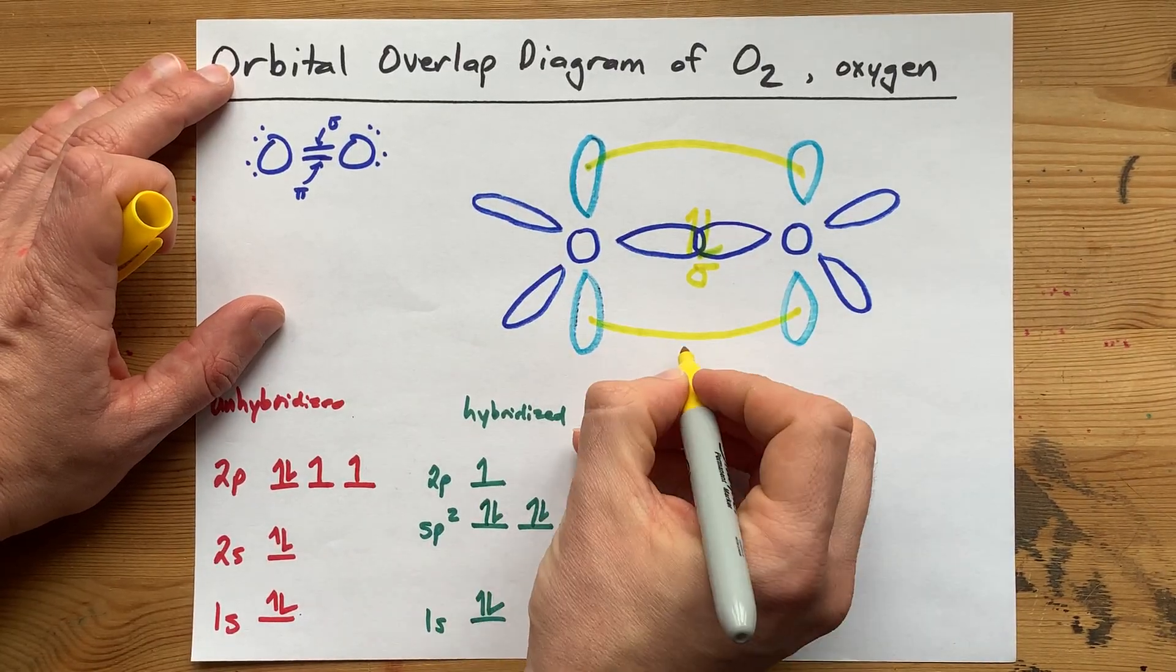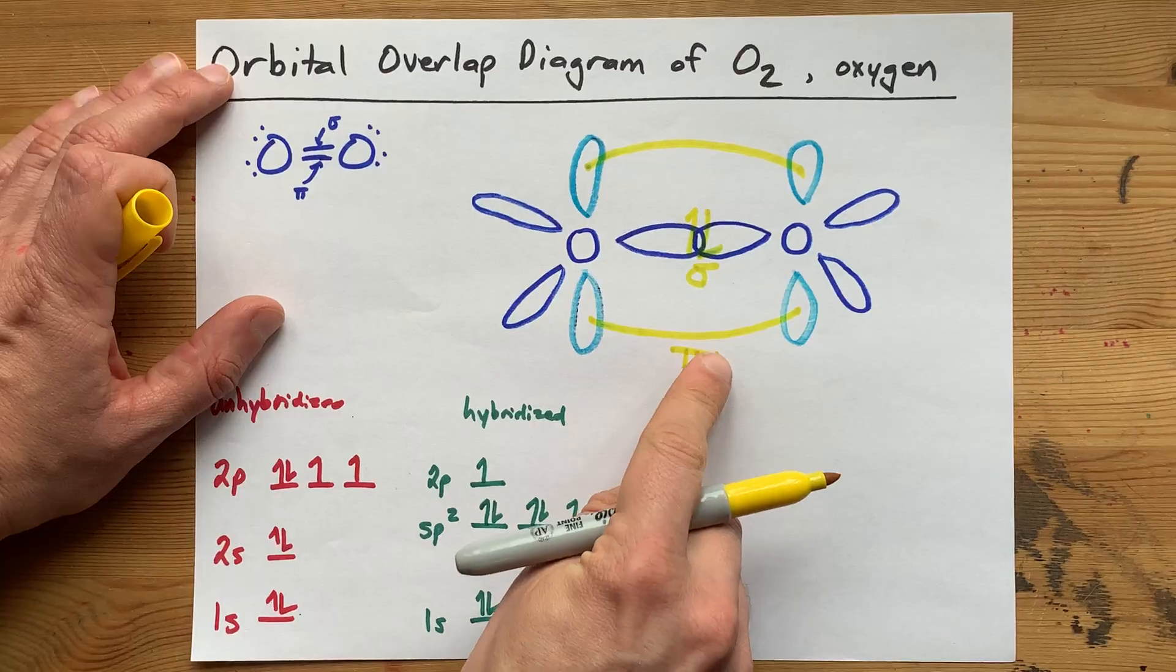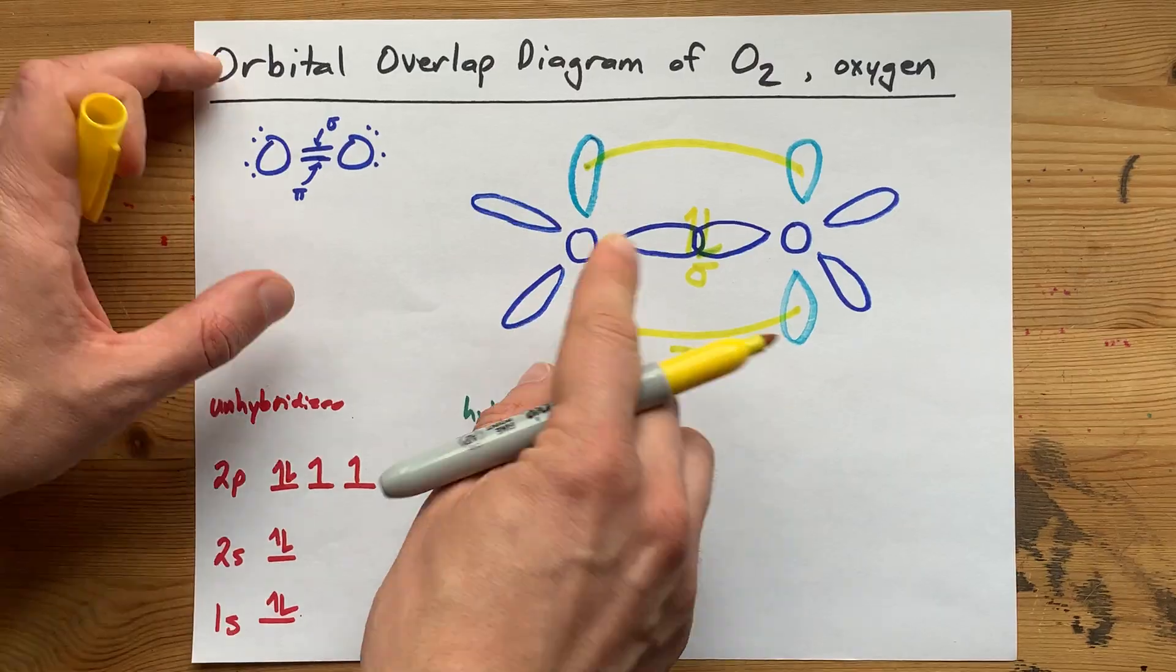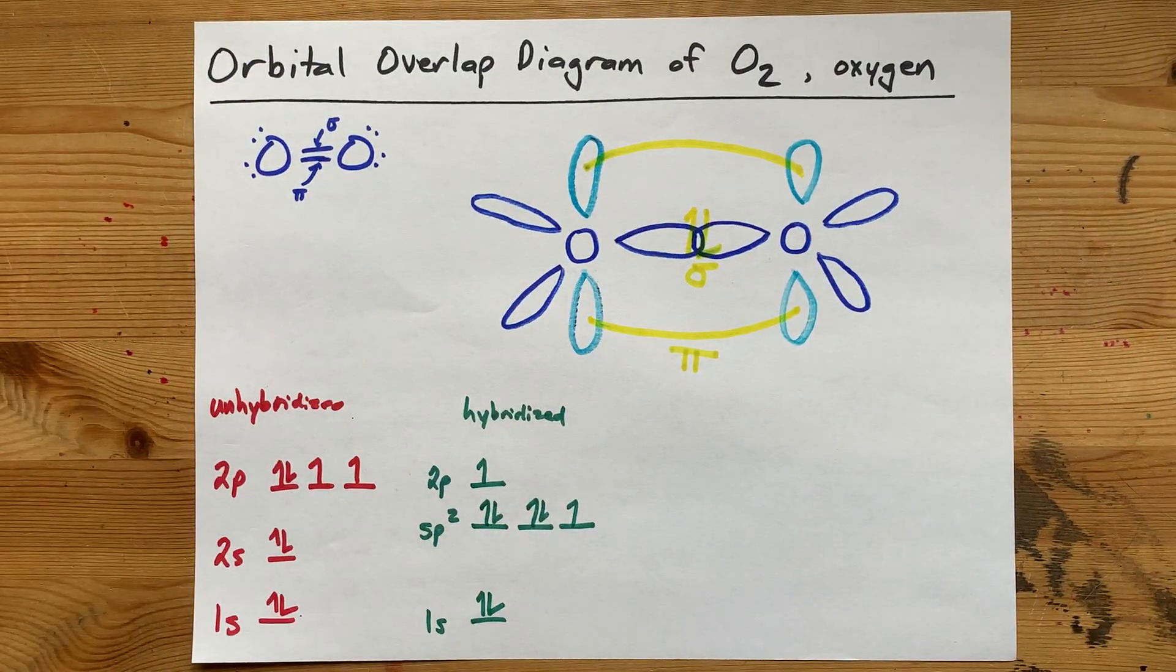So here, I'll draw that as the sigma. I'm going to draw this as the pi, but you need to know that these two yellow lines combine to make a pi bond.